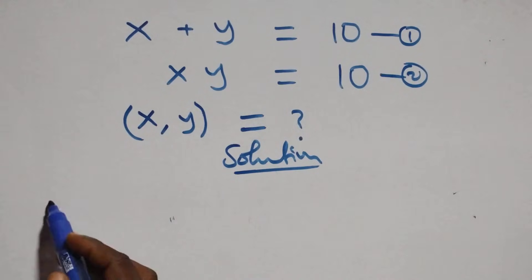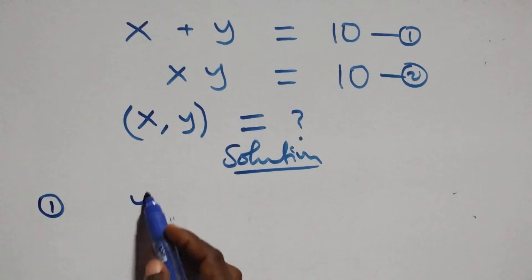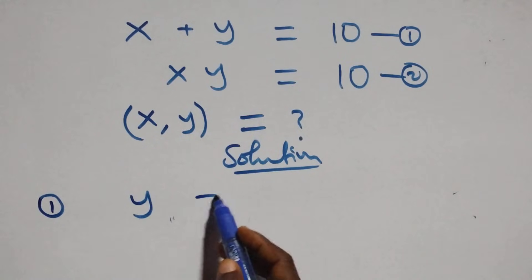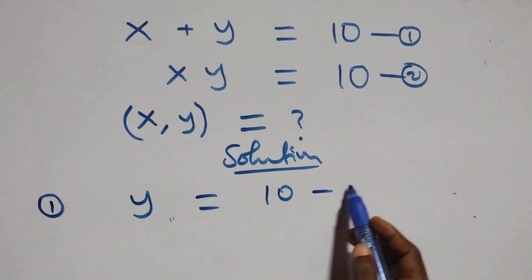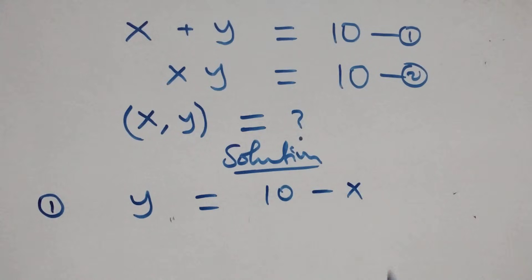From equation 1, we can make y the subject. We have y equals to 10 minus x.